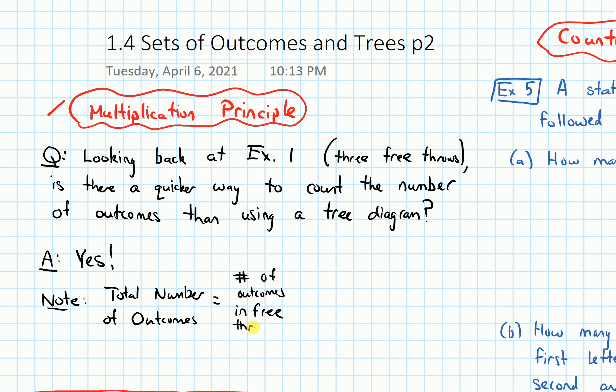In free throw one, how many outcomes are there? Well, there are two outcomes for free throw one: either he makes it or misses it. And then we multiply that by the number of outcomes in free throw two. And in free throw two, again, there were two outcomes because either he makes it or he misses it.